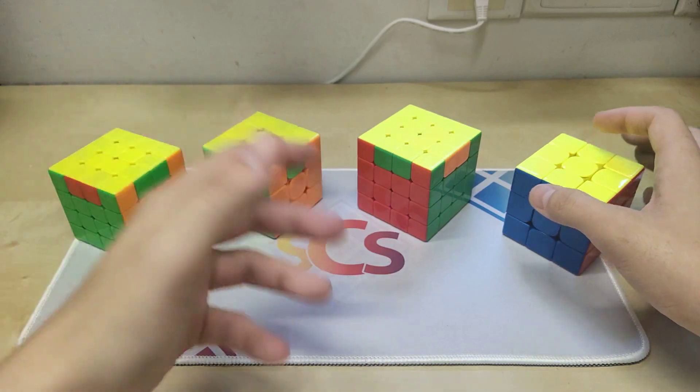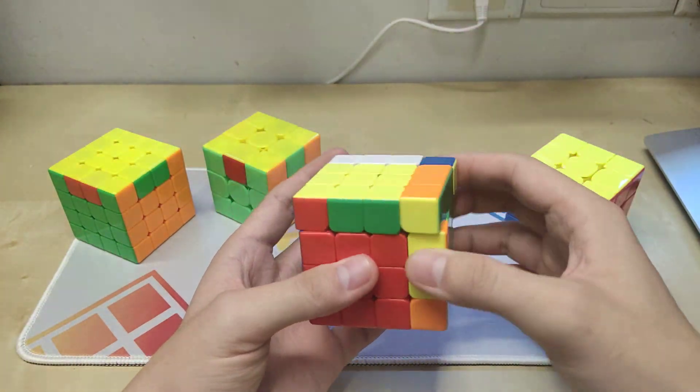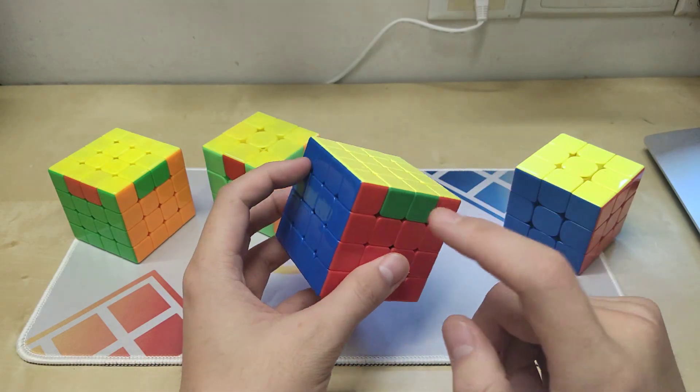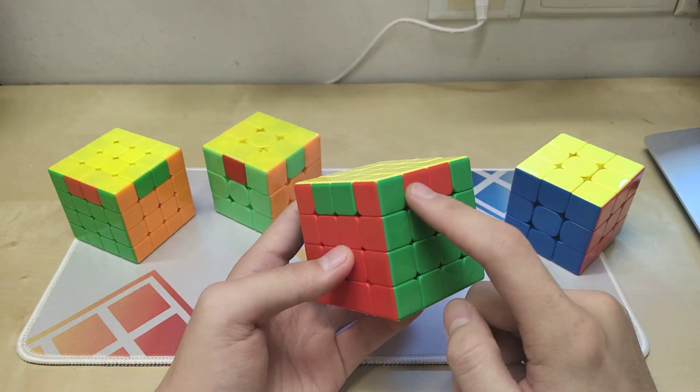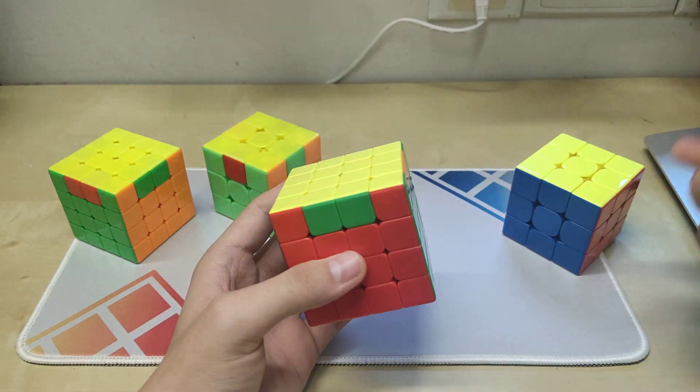Now we can do the same thing to the 4x4 and see what happens. We can see that the green edge and the red edge should be swapped. So, we can make some changes to the algorithm.